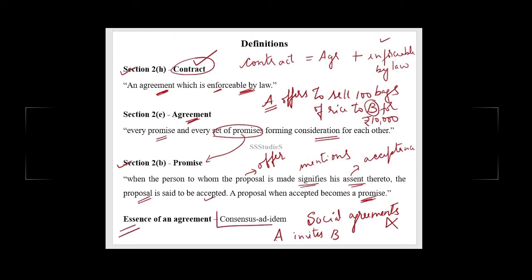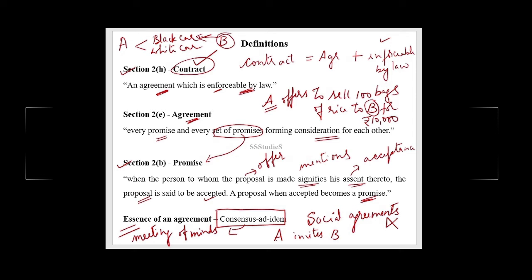The essence of an agreement is consensus ad idem, which means meeting of minds. For example, A has got two cars — one black and one white. If he agrees to sell the black car and B also knows he is purchasing the black car, there is consensus ad idem. But if A intends to sell the black car and B thinks he is purchasing the white car, there is no consensus ad idem. Both parties should be talking about the contract in the same sense and at the same time.